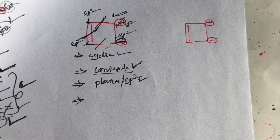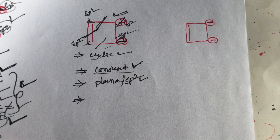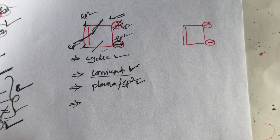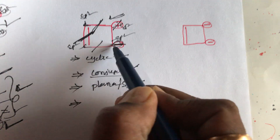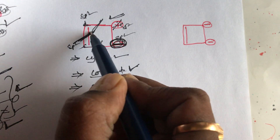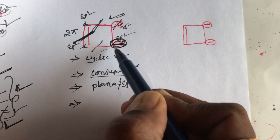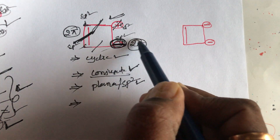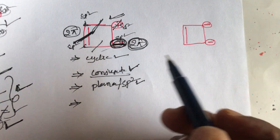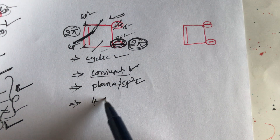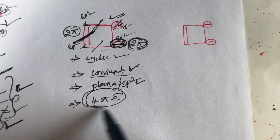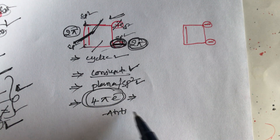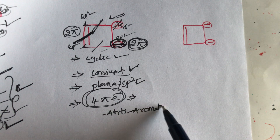What about the fourth condition? The compound must follow Hückel's rule. In this given structure, how many pi electrons are there? There is a double bond — that gives two pi electrons. The negative charge also contributes two pi electrons. So in this compound, the total is 4 pi electrons. Four pi electrons belong to anti-aromatic.